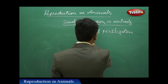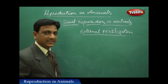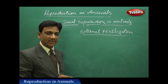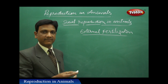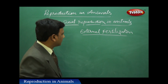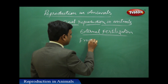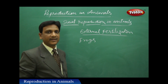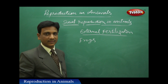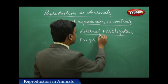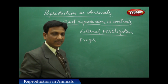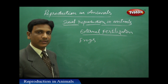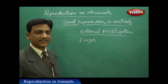We have seen that in snakes, lizards, and mammals, internal fertilization takes place — male gametes are introduced into the female body where fertilization occurs. But in some cases, like amphibians such as frogs, fertilization takes place outside their bodies. This is called external fertilization — fertilization that takes place outside the body of the organism.